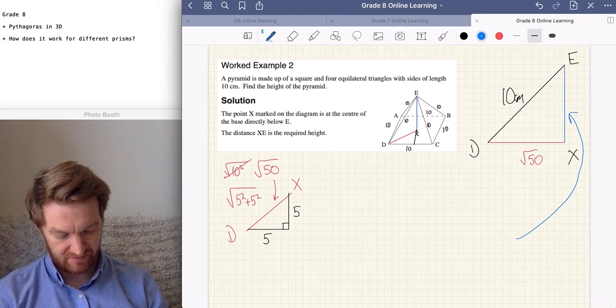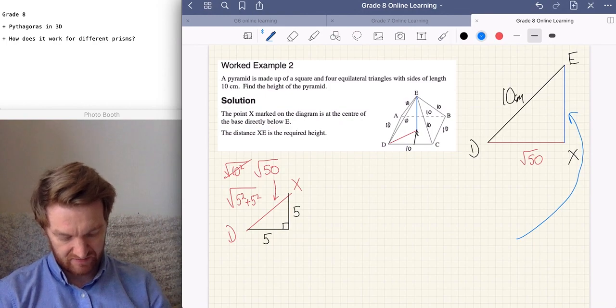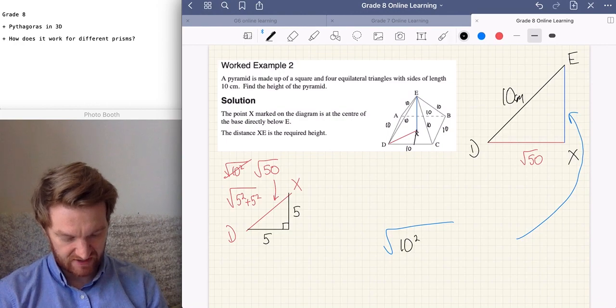So, now we can add that the diagonal is 10 centimeters. So, now we know that. If we didn't get given that in the question, we would have to work it out. But now we know that, we can say, different formula, we take the longest side, and we subtract the shorter side, squared.